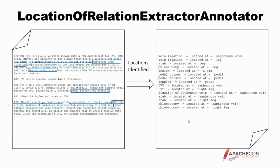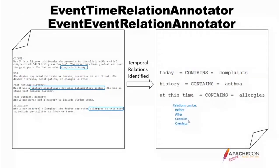Here are some temporal relation annotator examples. Text on the left, what it pulled out on the right. 'Complaints today' — it says today contains complaints. 'History significant for mild intermittent asthma' — it says history contains asthma. 'At this time' contains allergies. The event time relation annotator uses any time expression — so 'today,' but also specific dates like March 13th. The temporal relations it identifies are: before, after, contains, and overlaps.